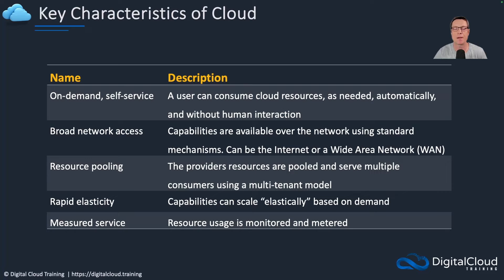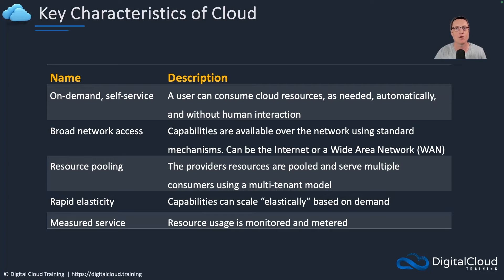The next characteristic is rapid elasticity. As I mentioned, most cloud services should scale automatically based on demand — as you get more demand for your application, the underlying infrastructure scales so your service has more resources to use, and when you don't need those resources they're given back. And that brings us to the last point: measured service. You should only be paying for what you actually use, which means there should be some kind of itemized bill where you can see the various components of your bill, how much you used, the rate for that service, and your total amount.